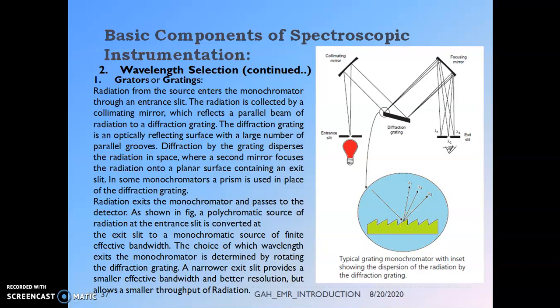The grating is a very crucial component in the instrument as it allows individual bands of wavelength to pass through. A metal surface with grooves is sparkled with aluminum powder — which is highly reflective — making the surface such that whenever incident light hits it, the surface diffracts the light into its component bands. The single light is split into bands of wavelengths.